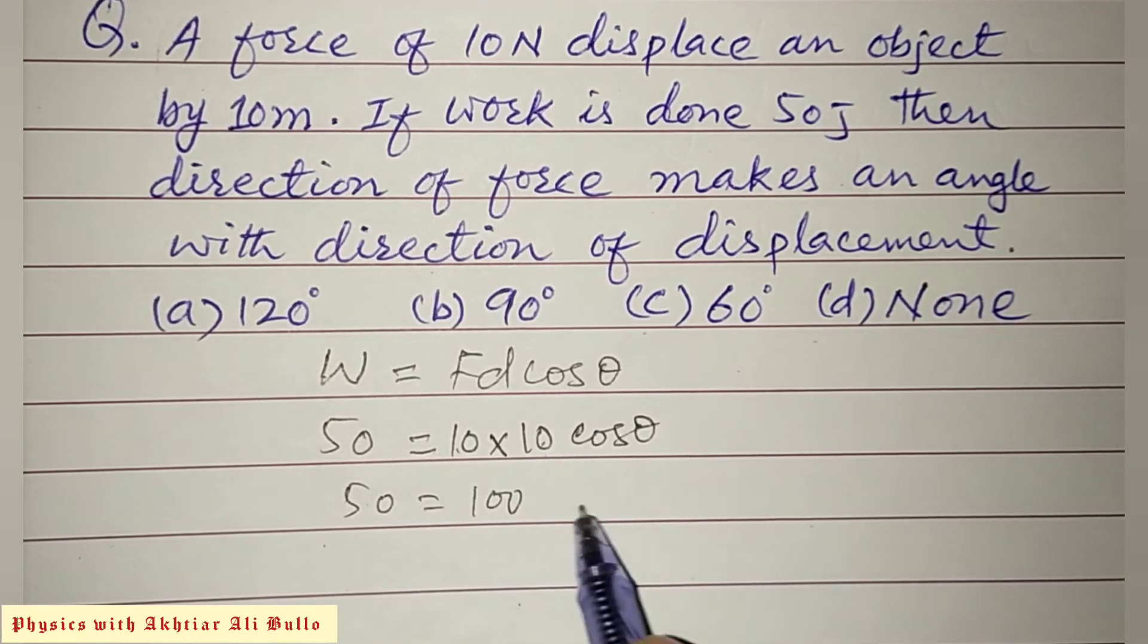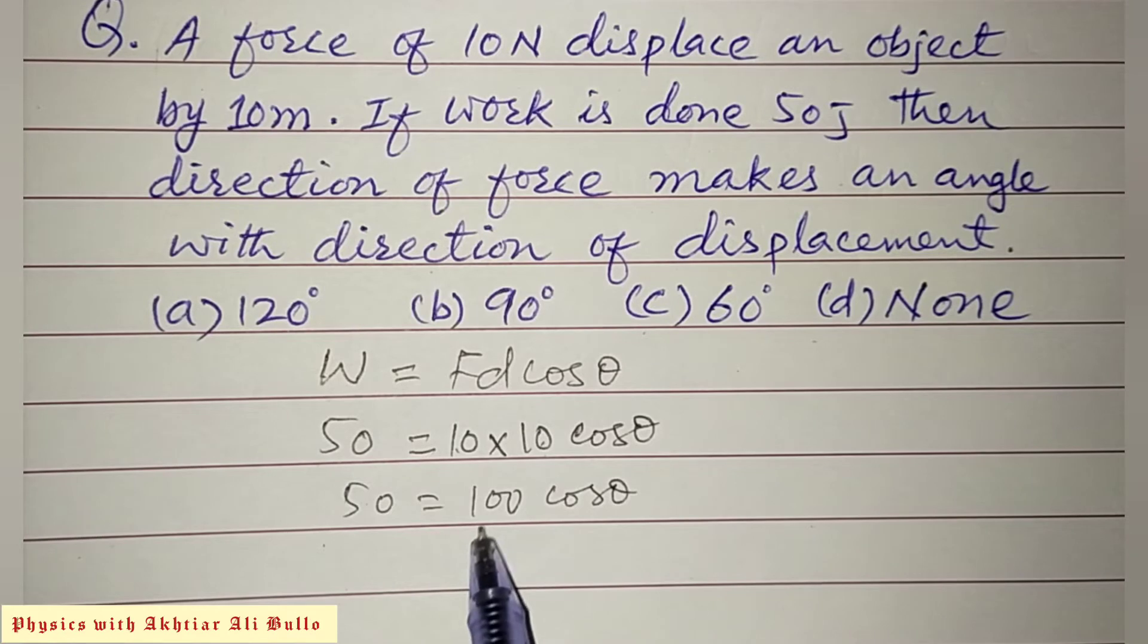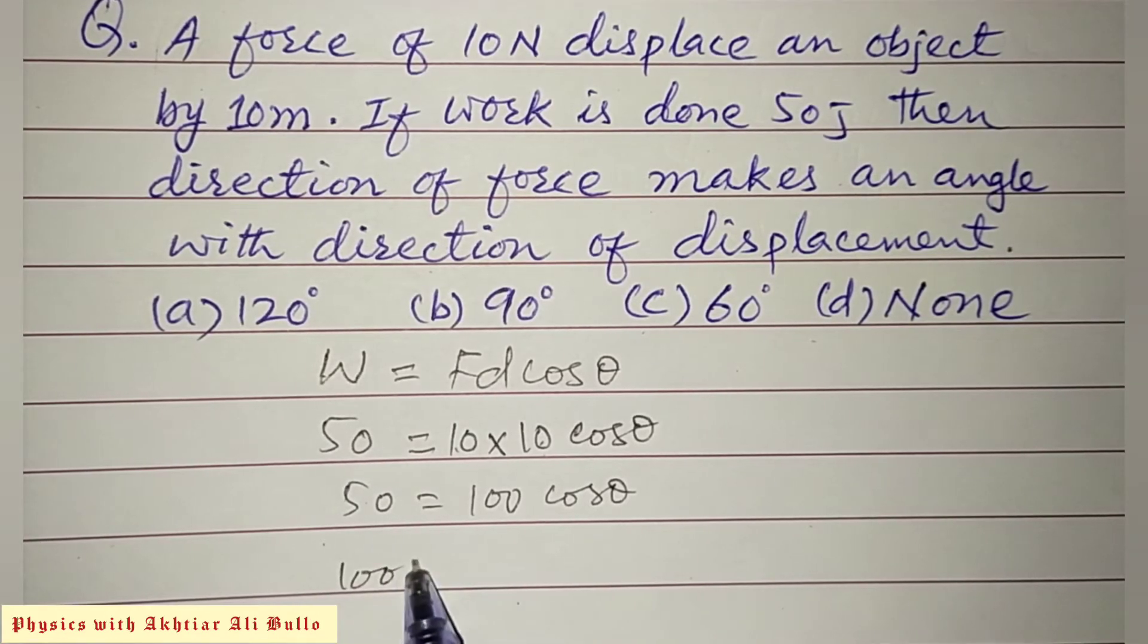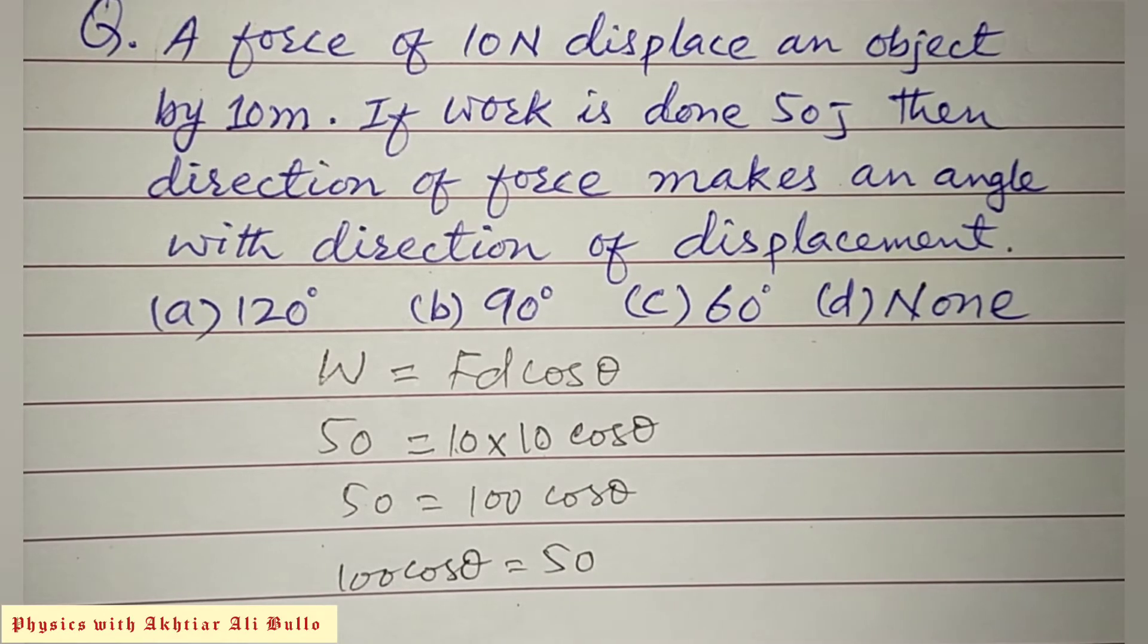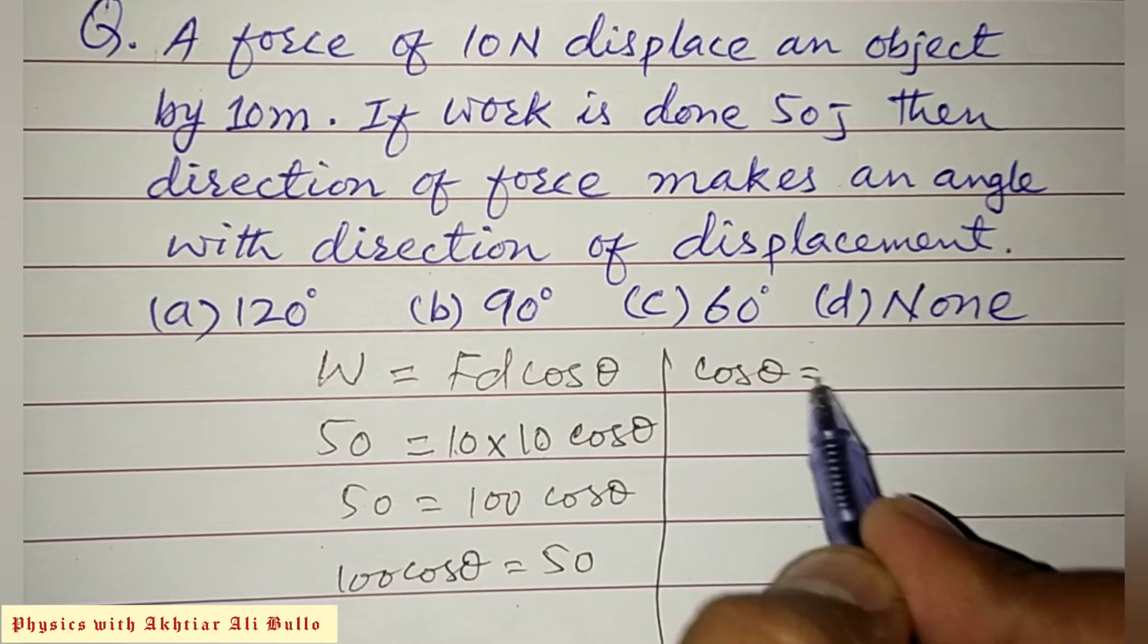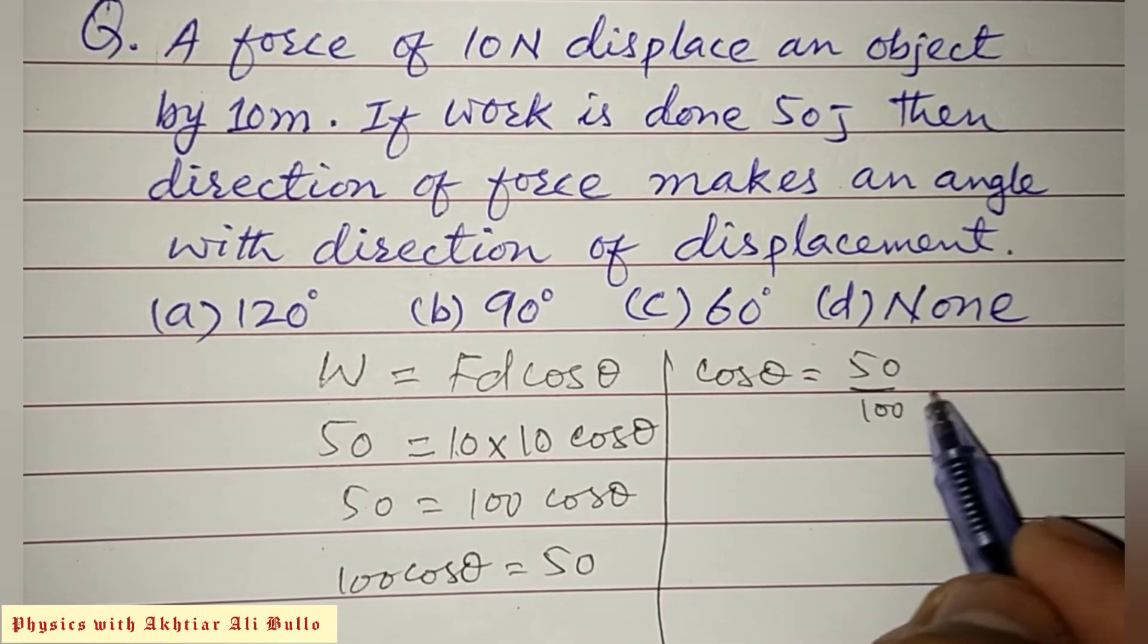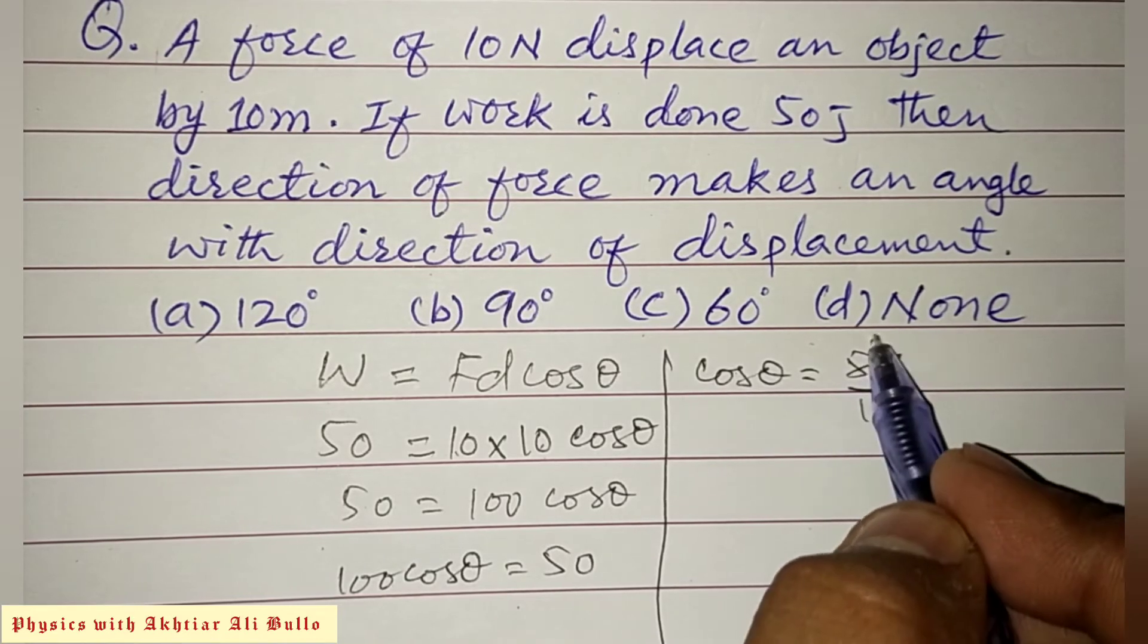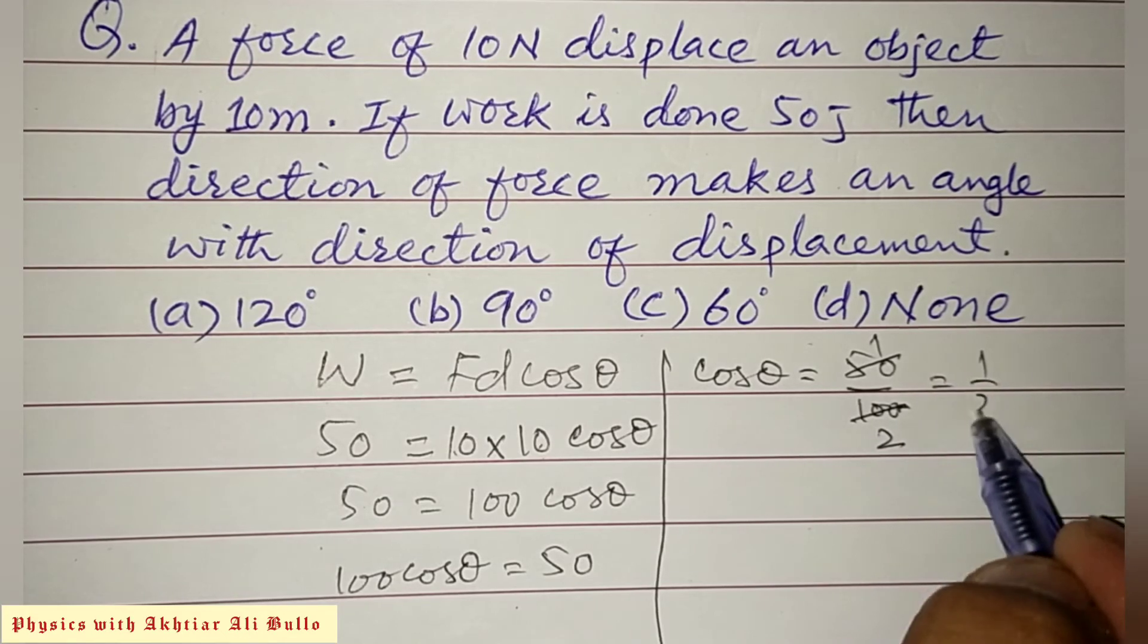It will be 100 cos θ. So we have to find the angle. We can write it as 100 cos θ equals 50, so cos θ will be equal to 50 upon 100. So 50 and 100 simplify to 1 upon 2.